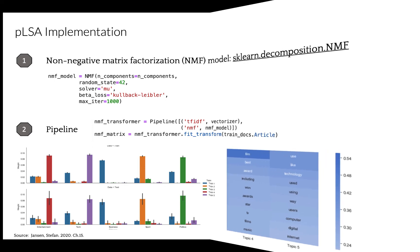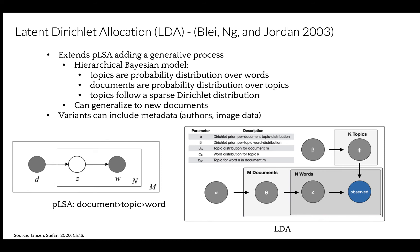Which brings us to our next model, latent Dirichlet allocation LDA. This model extends PLSA by adding a generative process for topics. In fact, it is the most popular topic model because it tends to produce meaningful topics, and it is a hierarchical Bayesian model, which assumes topics are probability distributions over words, and documents are distributions over topics, and the model assumes also that the topics follow a sparse Dirichlet distribution. We can also use variants for LDA, which could include metadata, for example, authors, articles, or even image data. Recall, in PLSA we'd sample a document, then a topic based on a document, then a word based on that topic.